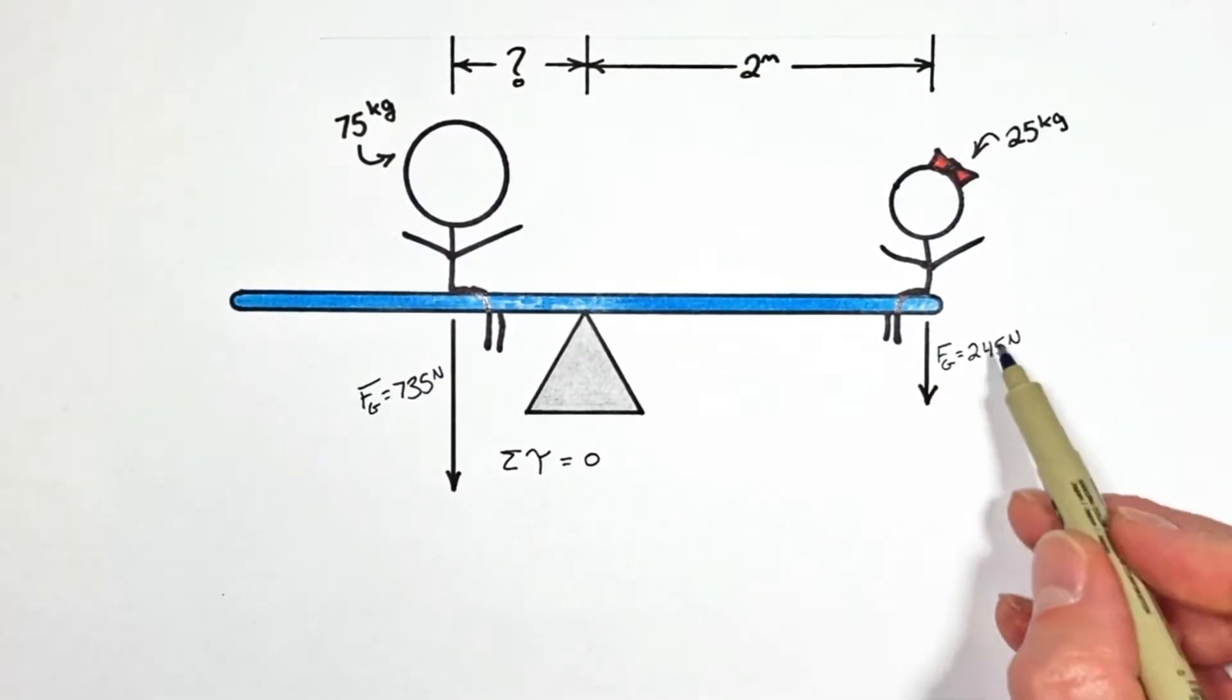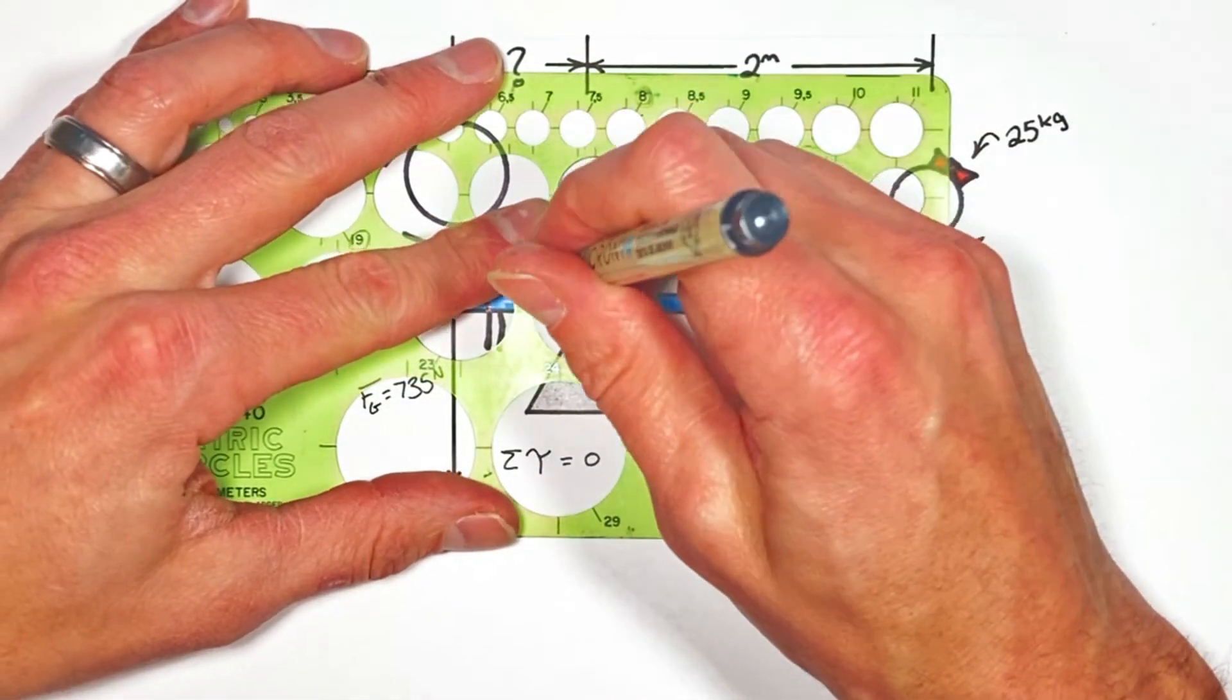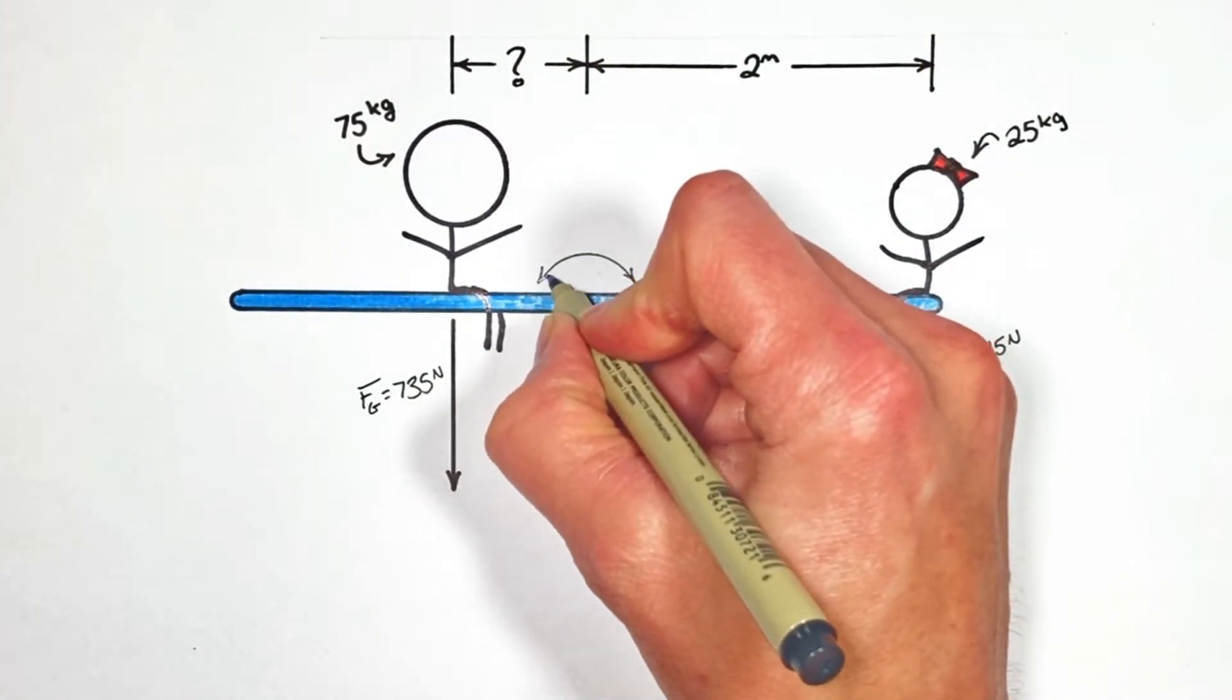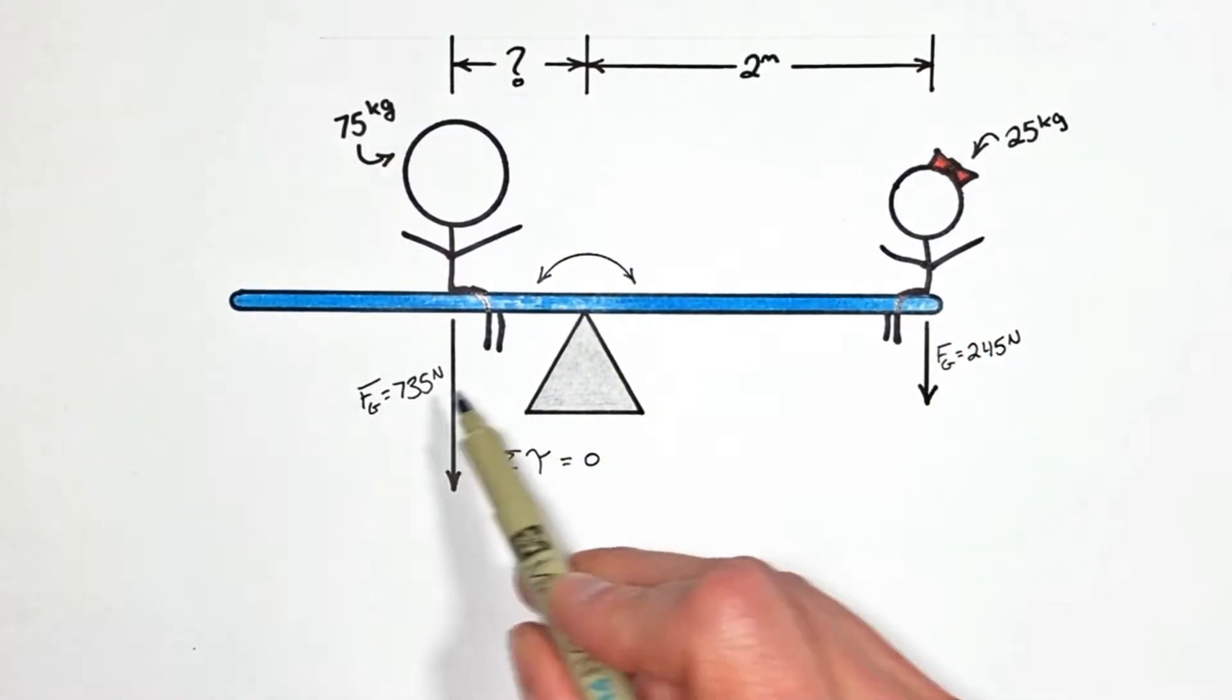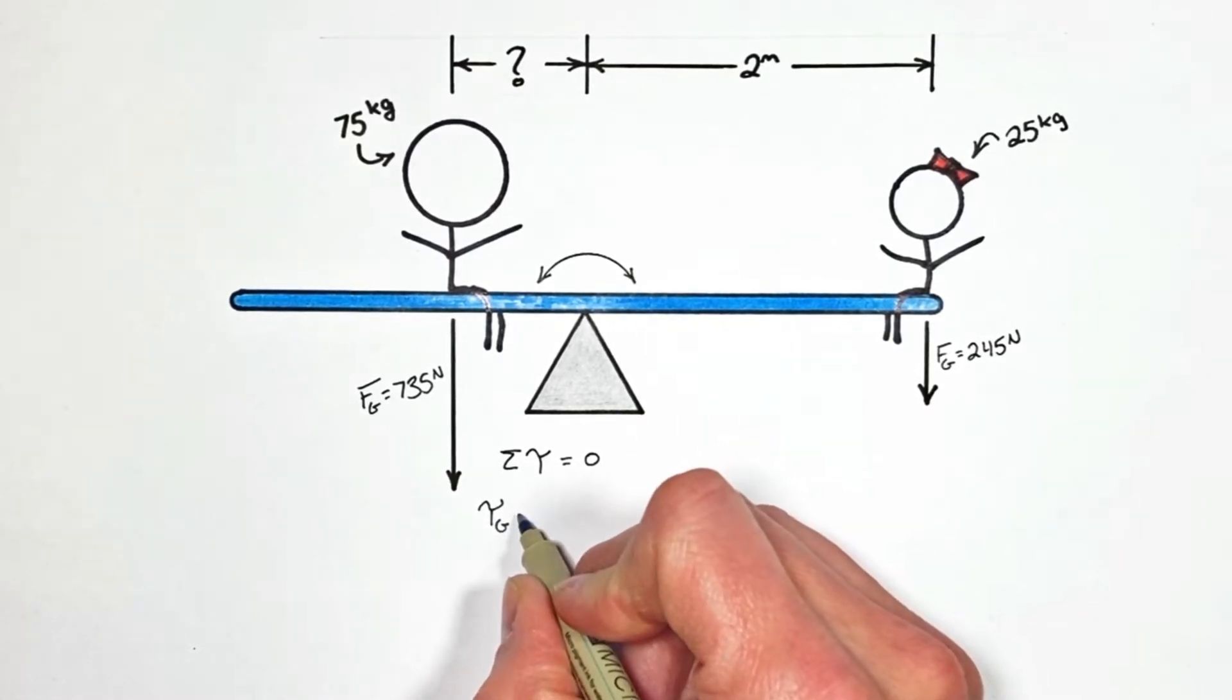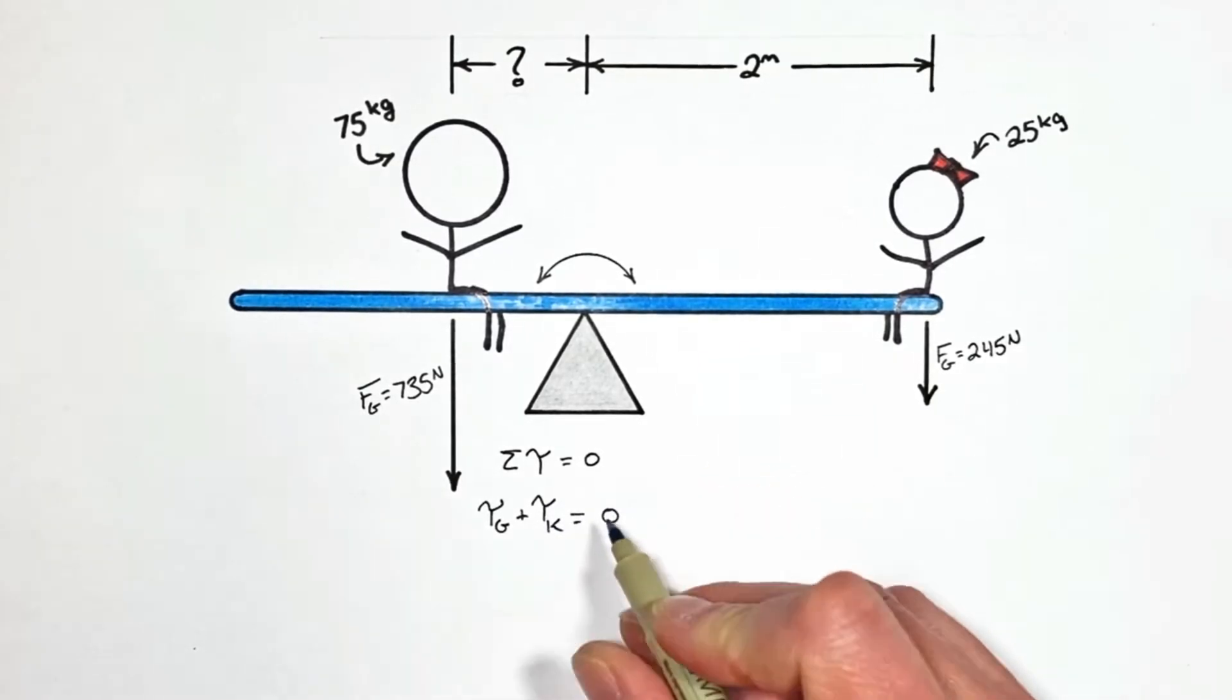Now really what's happening here is each of these forces are producing a competing torque around this pivot point. Where the torque from the little kid is trying to make the teeter-totter rotate clockwise, and the torque from the grown-up is trying to rotate this whole beam counterclockwise. So if there's two torques in this problem, then the sum of all torques is actually the torque from the grown-up, I'll call that tau sub g, plus the torque from the kid or the child. And those need to add up to 0.